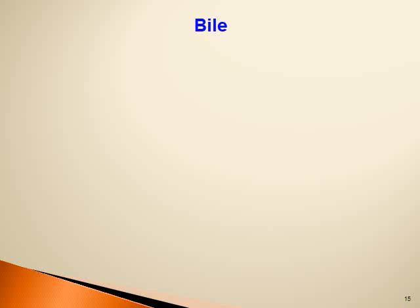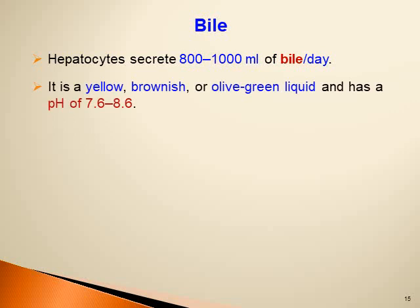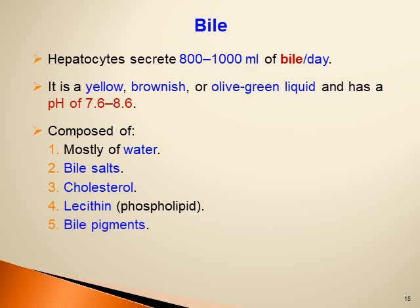The secretion of the liver is called bile. Hepatocytes secrete about 800 to 1000 milliliters of bile per day. It is a yellow, brownish or olive-green liquid with a pH of 7.6 to 8.6 — it is alkaline because it is rich in bicarbonate. It is composed mainly of water, bile salts important for emulsification and absorption of lipids, cholesterol, lecithin (a phospholipid), bile pigments like bilirubin, and several ions.